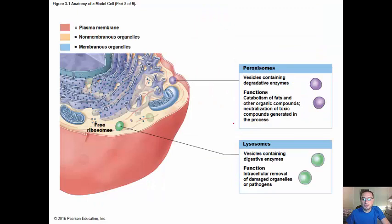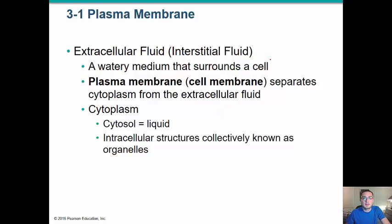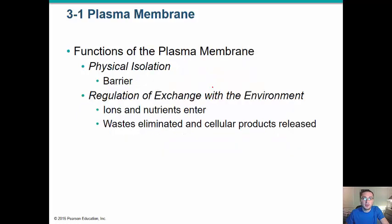Peroxisomes and lysosomes, they're vesicles important in degradation and digestion enzymes. Nucleus, that's like the brain of the cell. Keep that in mind. Plasma membrane, like I said, it's controlling what goes in and what comes out of the cell.